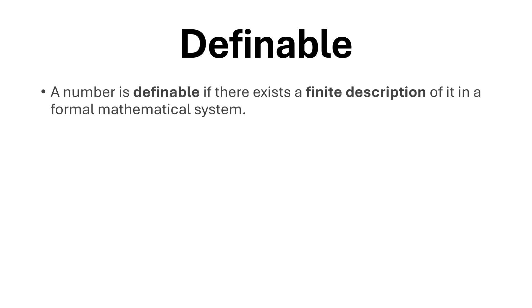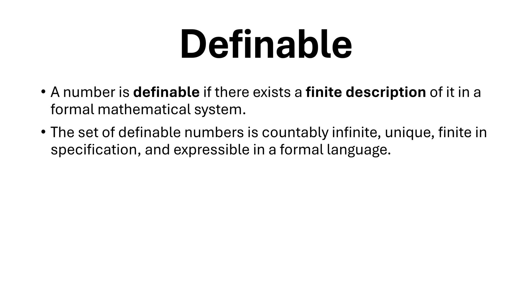A number is definable if there exists a finite description of it in a formal mathematical system. The set of definable numbers is countably infinite, unique, finite in specification, and expressible in a formal language. All rational numbers and all algebraic numbers are definable.